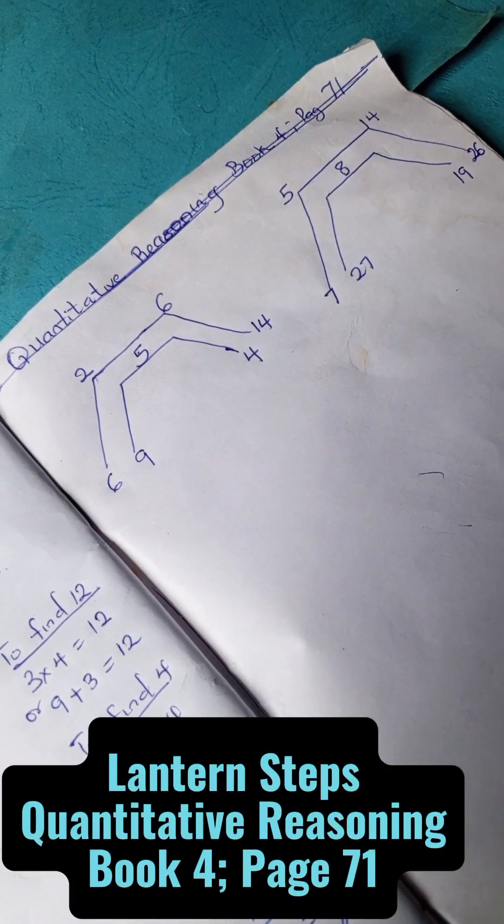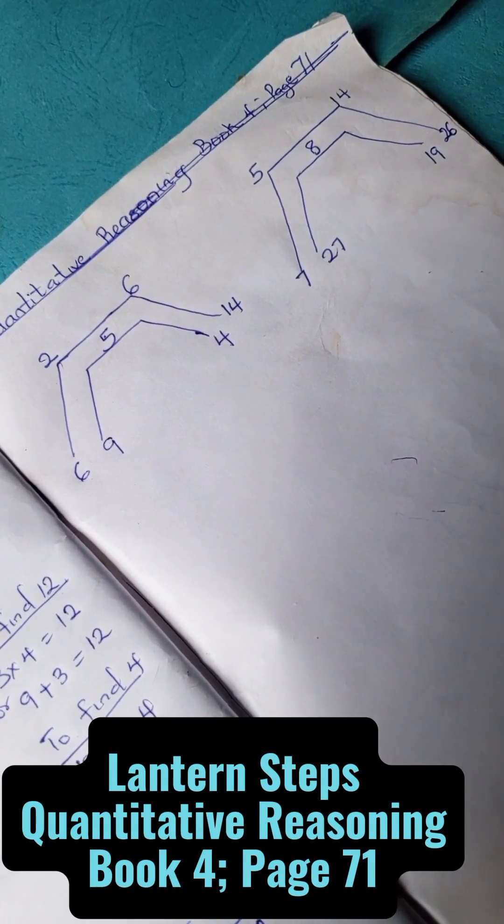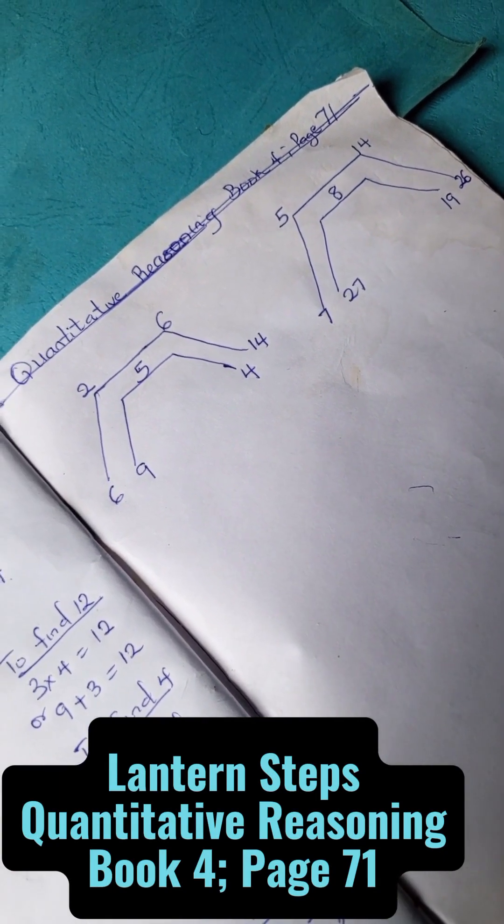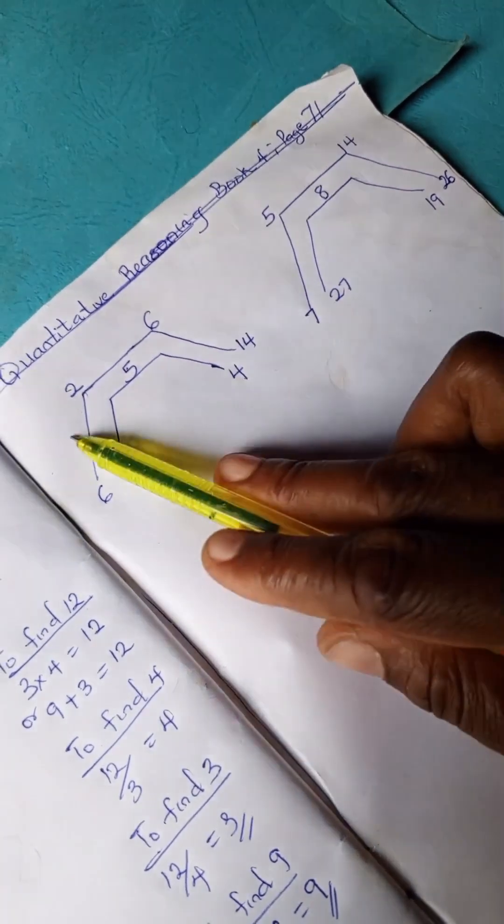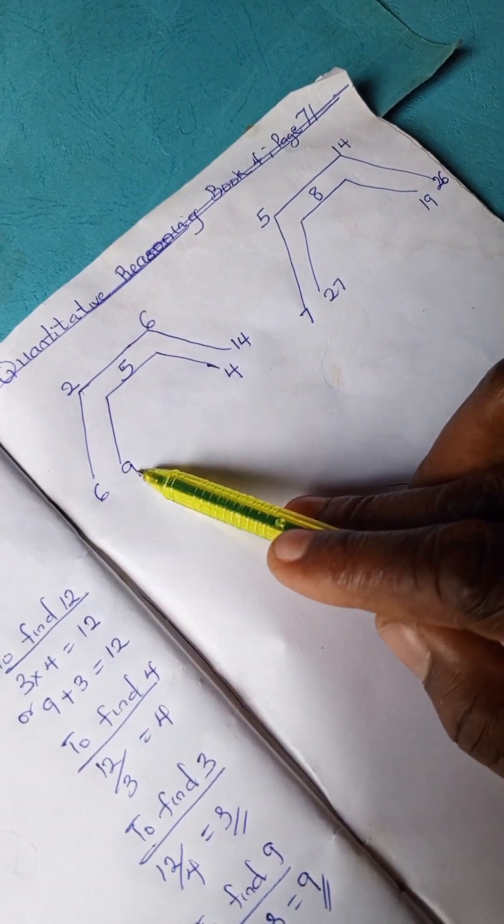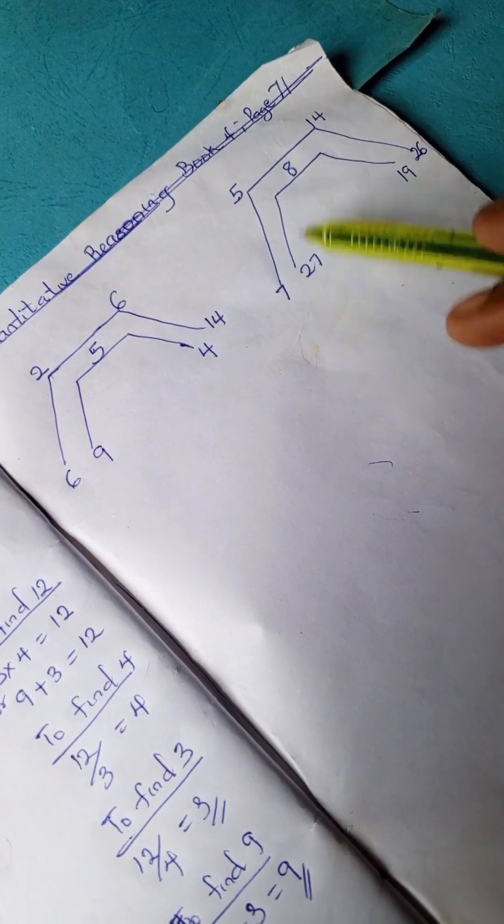Welcome to Quantitative Reasoning Solutions section. We have this problem from Lantern Step Quantitative Reasoning Book 4, page 71. We have 2, 6, 5, 6, 9, 4, 14, and here we have 5, 14, 8.